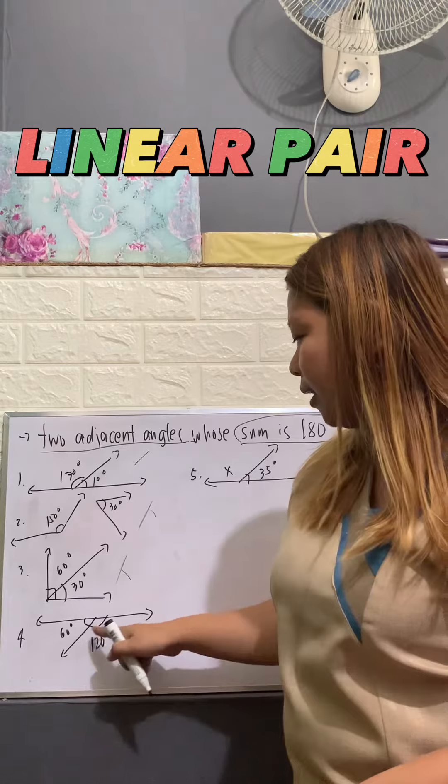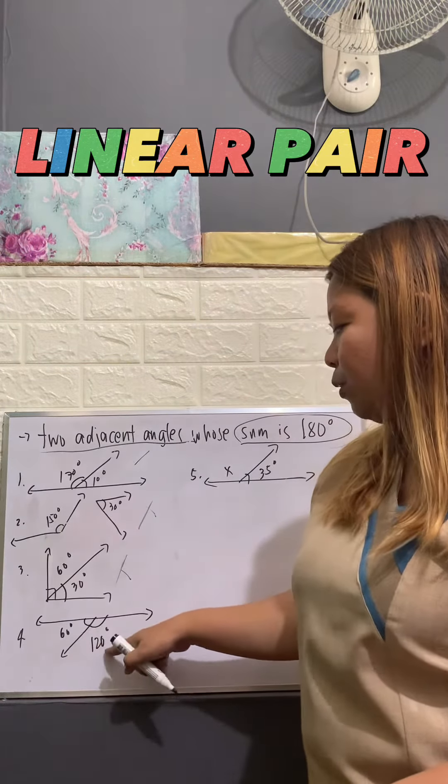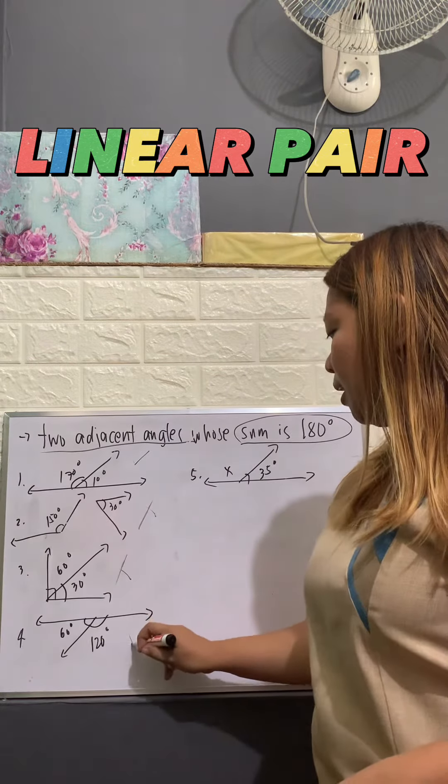How about this one? They are adjacent. They have common side. When you add the angles, you have 180. So, this is linear.